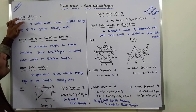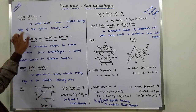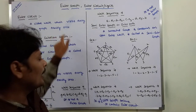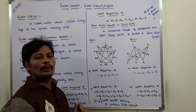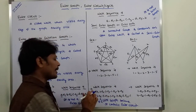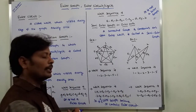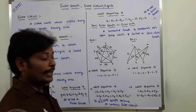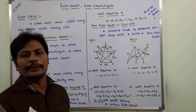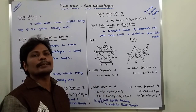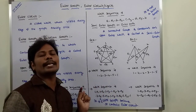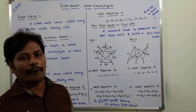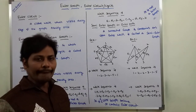In the Euler circuit, a closed walk visits every edge of the graph exactly once, but vertices may be repeated. The starting vertex and ending vertex must be the same, every edge is visited exactly once, and it covers all the edges of the graph. By satisfying these three conditions, this graph G is a Euler graph.